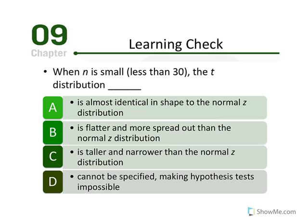We'll end this chapter with a quick learning check. First: when N is small (less than 30), the t-distribution — A) is almost identical in shape to the normal z-distribution, B) is flatter and more spread out than the normal z-distribution, C) is taller and narrower than the normal z-distribution, or D) cannot be specified, making the hypothesis test impossible. If you selected B, you're correct. A t-distribution is flatter than a z-distribution when sample is small. As N increases toward infinity, it becomes more normal and better approximates the z-distribution.